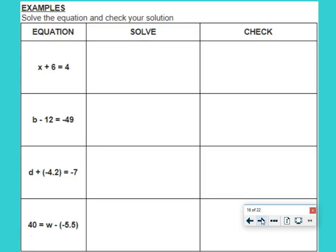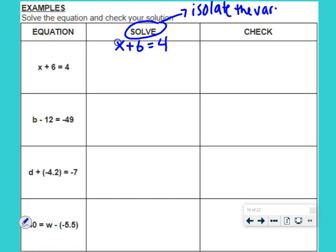We are going to use those properties to solve the equations. And then we are going to check our solution to make sure we're right. First equation is x plus 6 equals 4. Our goal when we are solving is isolate the variable. If you forgot what it means, just look up at your vocabulary. It means get the variable all by itself.